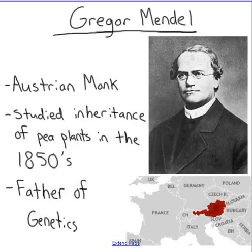So where did we get the name Mendelian genetics from? It actually came from the father of genetics — a man named Gregor Mendel. Gregor Mendel was an Austrian monk who lived during the 1800s, and he spent most of his life studying pea plants. He was very fascinated with science and inheritance, and essentially gave us some of the laws for genetics.